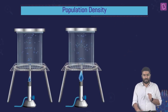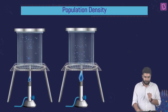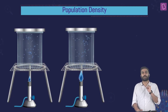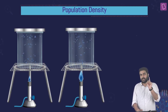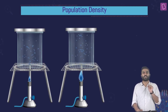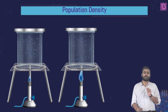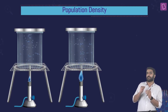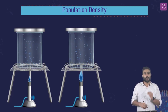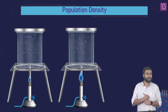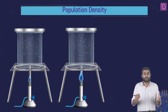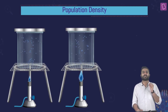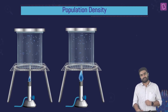Let's check understanding. We have two beakers of the same volume with a fixed lid, and both have the same number of particles. We have sped up the particles in the right beaker by increasing temperature. Will the population density change? It won't change, because neither N nor V is changing. So both beakers have the same population density.